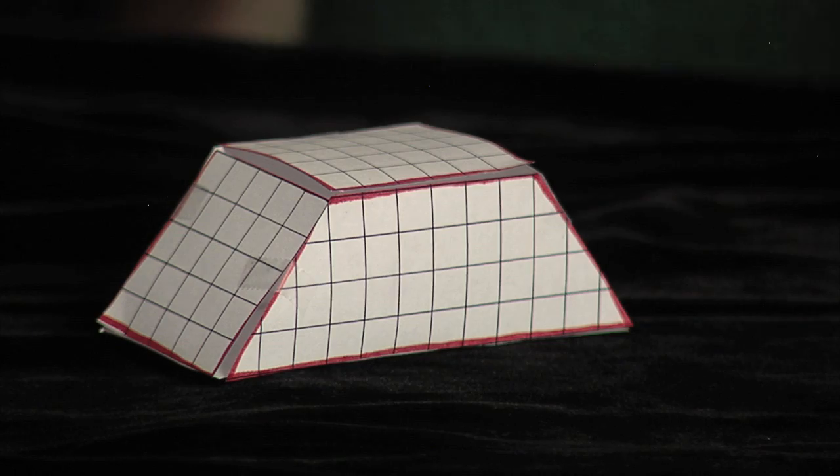The other way to find the surface area of a trapezoidal prism is to use the formula S equals pH plus 2b, where p represents the perimeter of the base and b represents the area of the base. In this case, the area of the trapezoid.